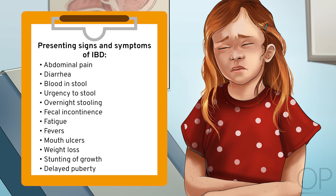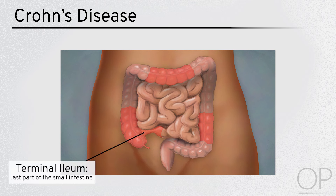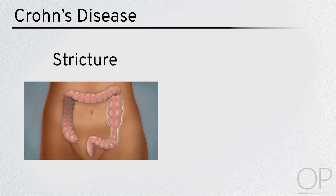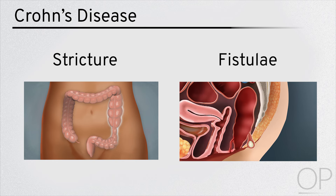The location and type of intestinal inflammation helps us distinguish Crohn's disease from ulcerative colitis. In Crohn's disease, inflammation can occur anywhere throughout the GI tract, from the mouth to the anus, with the terminal ileum being one of the most commonly affected sites. Inflammation classically occurs in a patchy pattern, with areas of diseased intestine separated by healthy intestinal tissue. A subset of patients with Crohn's disease have a tendency to form strictures and/or fistula. A stricture is a narrowing of the intestine. Fistula are abnormal connections between the intestine and other parts of the body, commonly the skin.